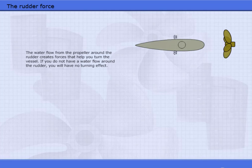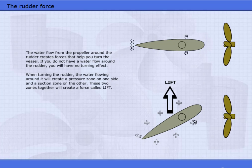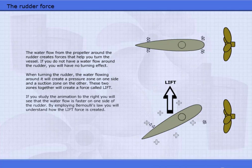The water flow from the propeller around the rudder creates forces that help you turn the vessel. If you do not have a water flow around the rudder, you will have no turning effect. When turning the rudder, the water flowing around it will create a pressure zone on one side and a suction zone on the other. These two zones together will create a force called lift. If you study the animation to the right, you will see that the water flow is faster on one side of the rudder. By employing Bernoulli's law, you will understand how the lift force is created.